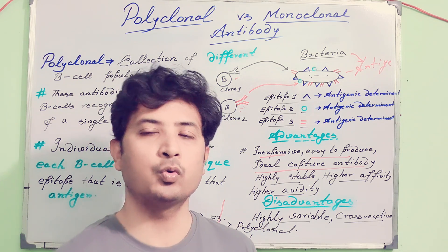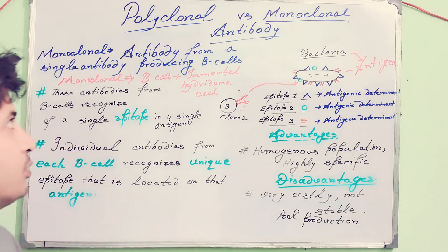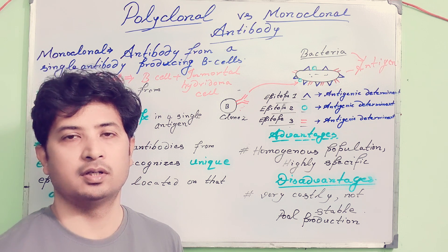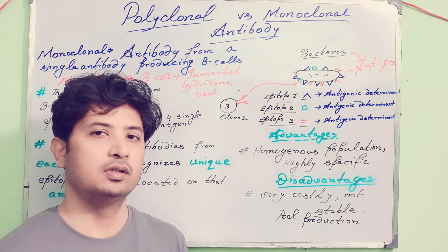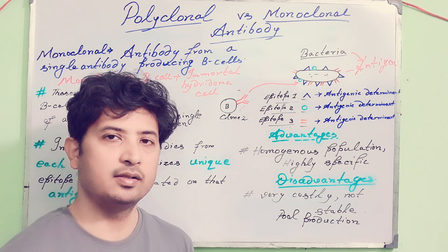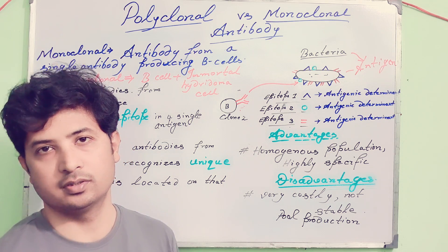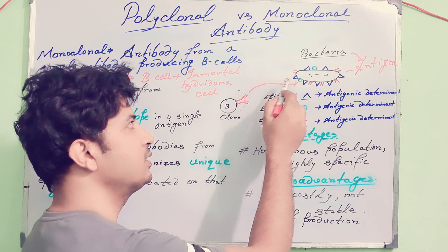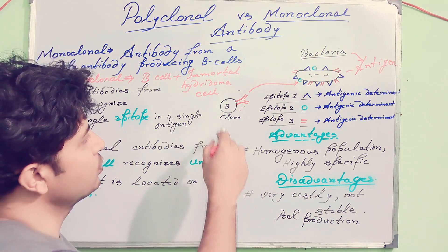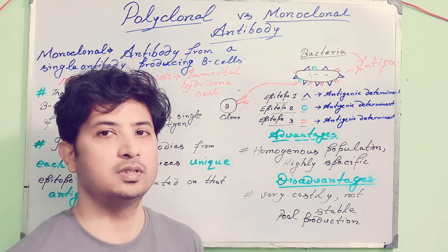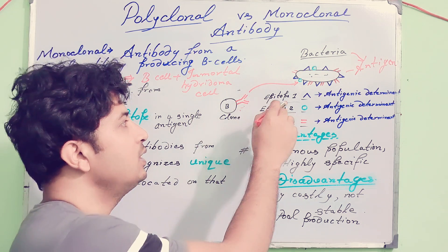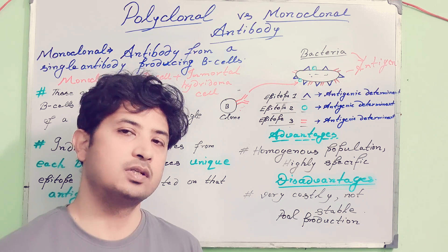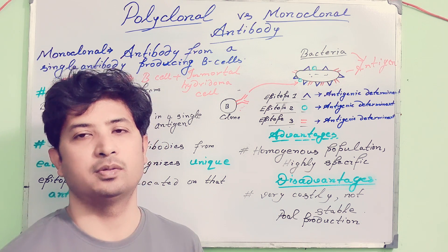Now let's move to monoclonal antibodies. Monoclonal antibodies are produced by hybridoma technology — this is a large topic I will describe in a separate class. For now, understand that hybridoma technology is used for their production. Monoclonal antibodies come from a single clone of B-cells that produces antibodies specific to only one epitope, say epitope 2. All clones produced through hybridoma technology will only recognize epitope 2 — not epitope 1 or epitope 3. The population is homogeneous.